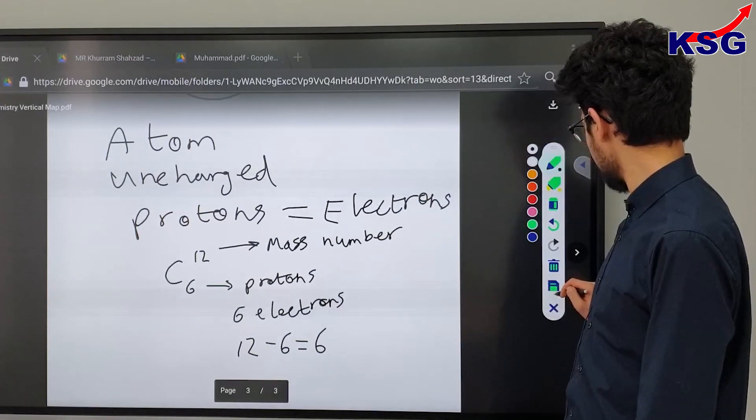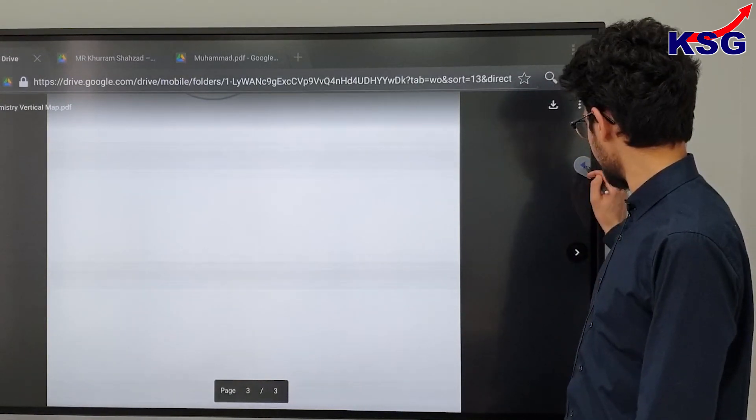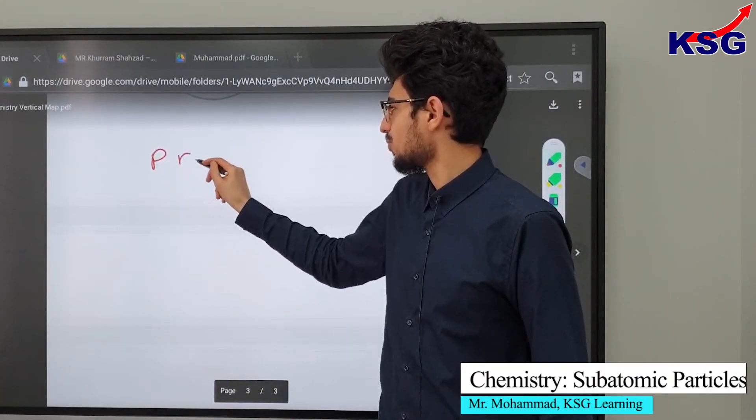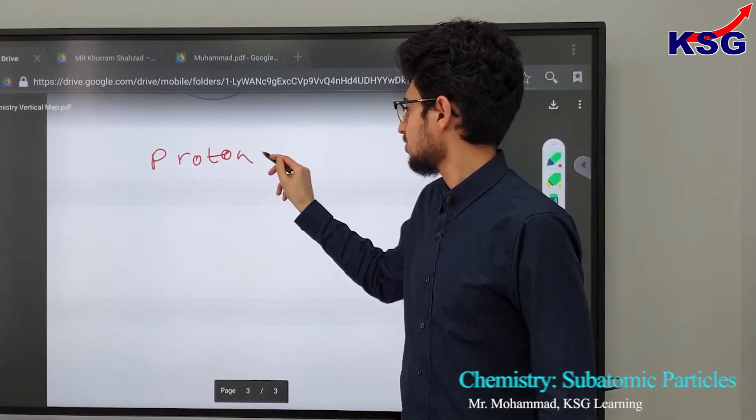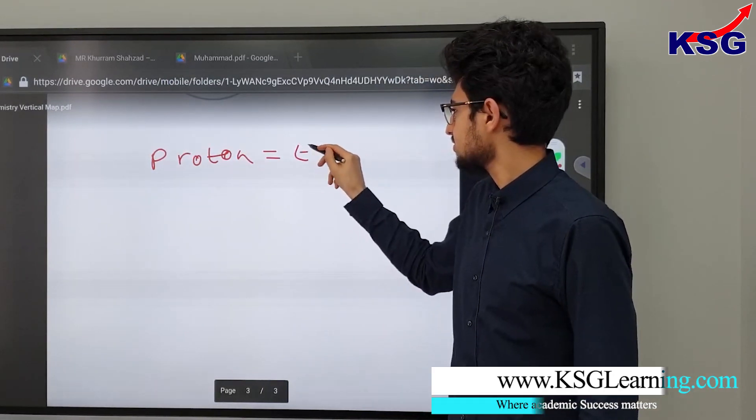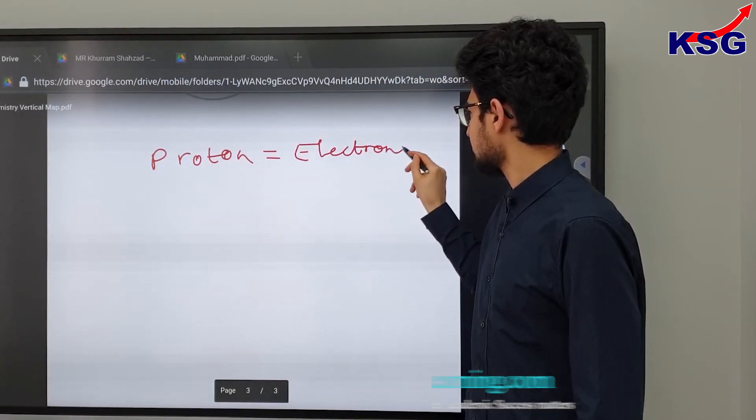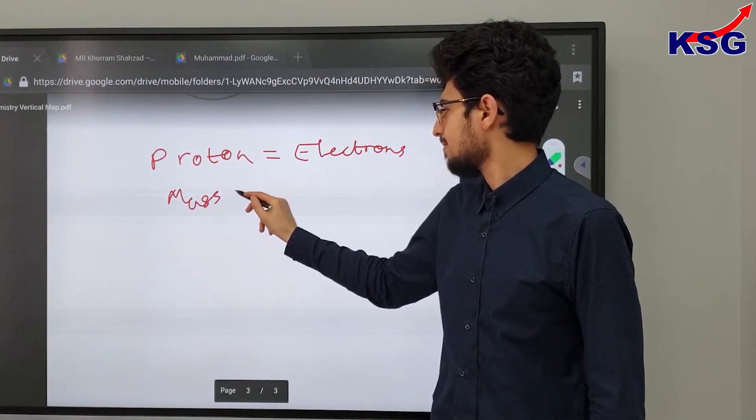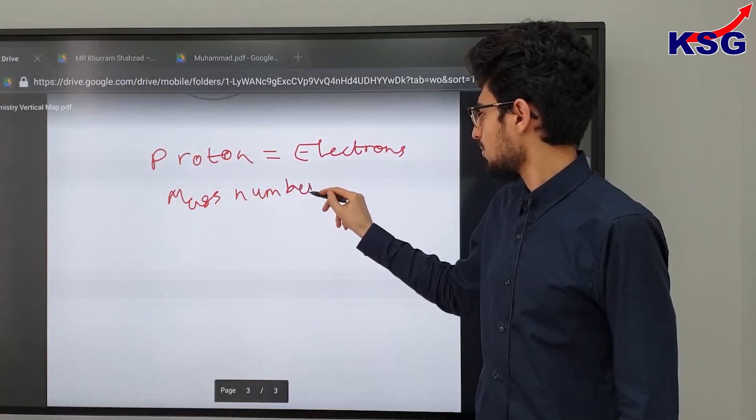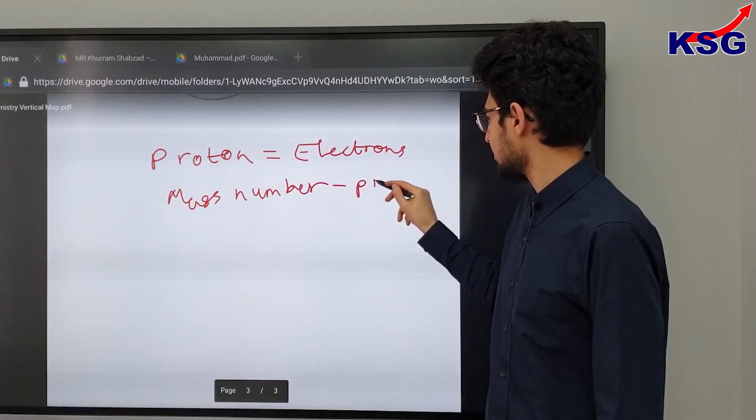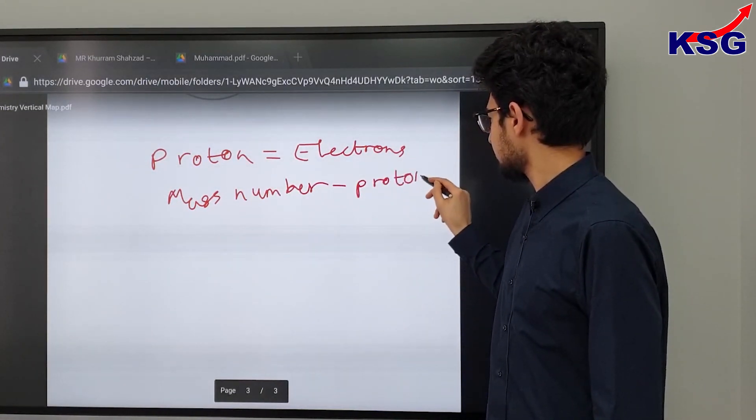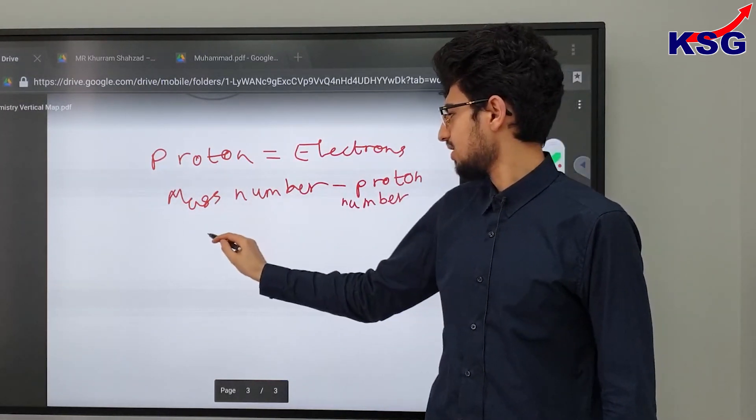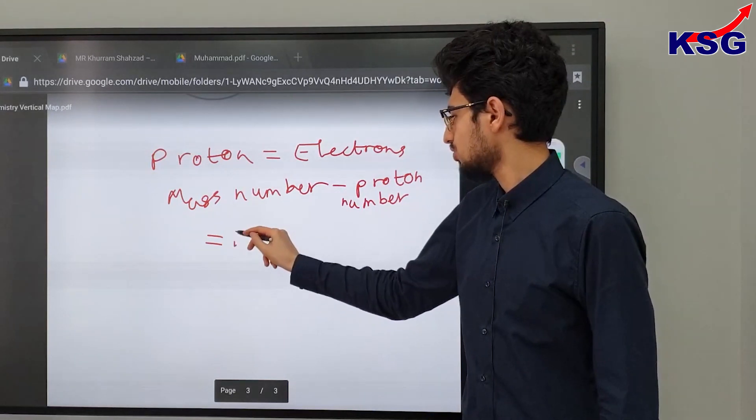Okay, so what equations could we use to ensure that we can always get these right? Well, all you need to remember is that the protons equal the electrons, and that the mass number minus the proton number is going to be equal to your number of neutrons.